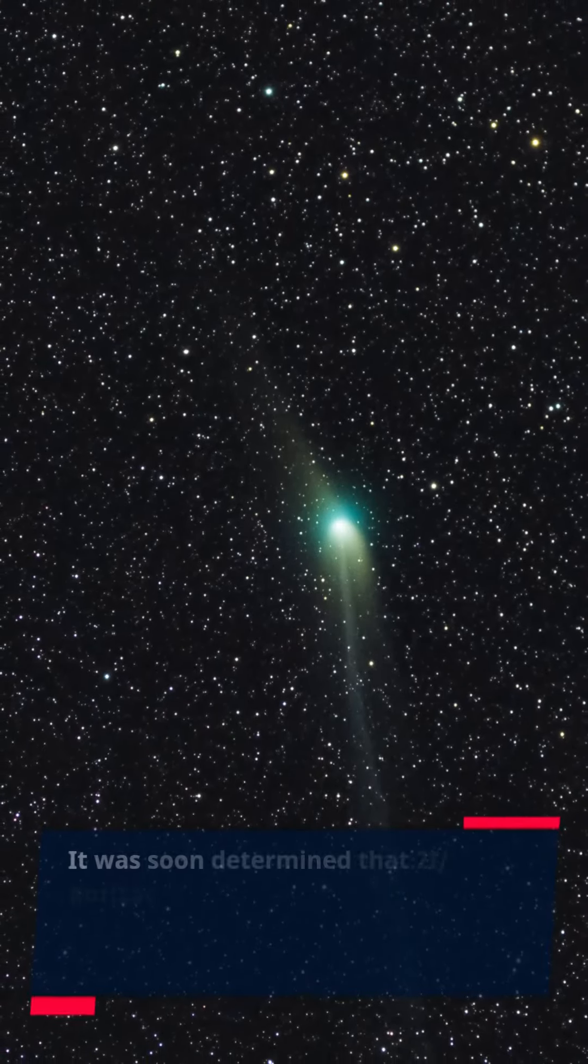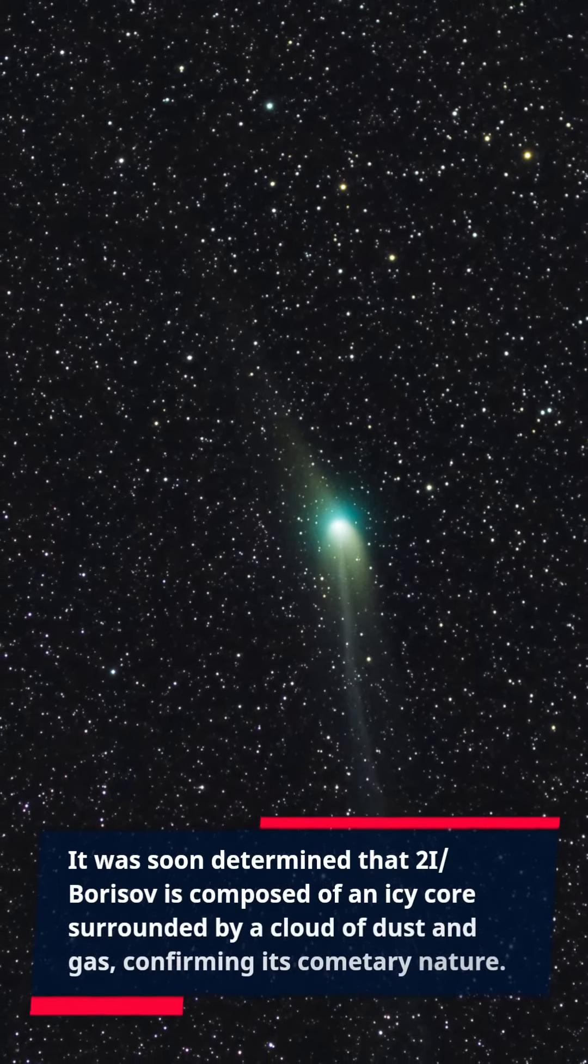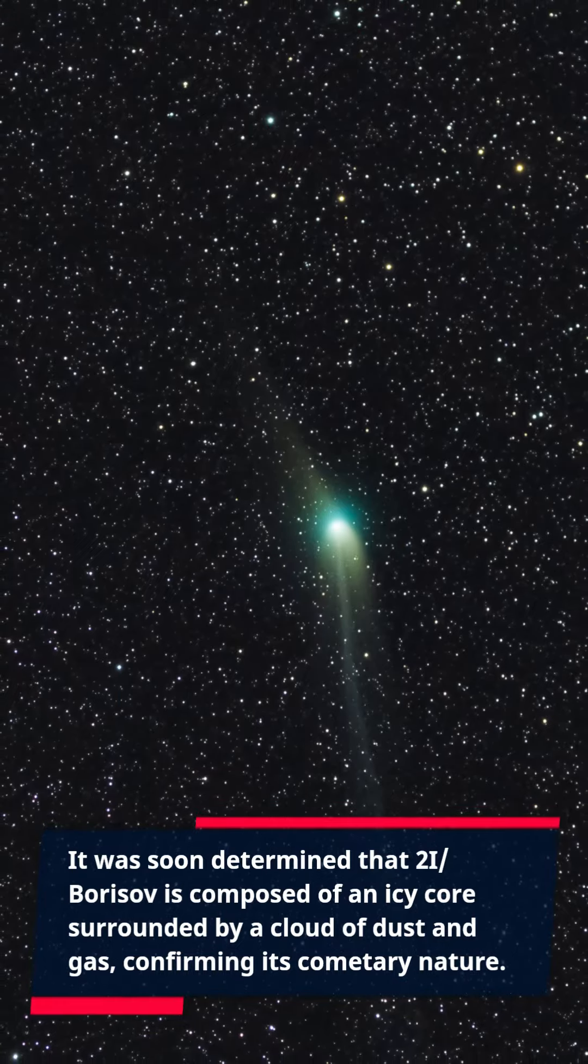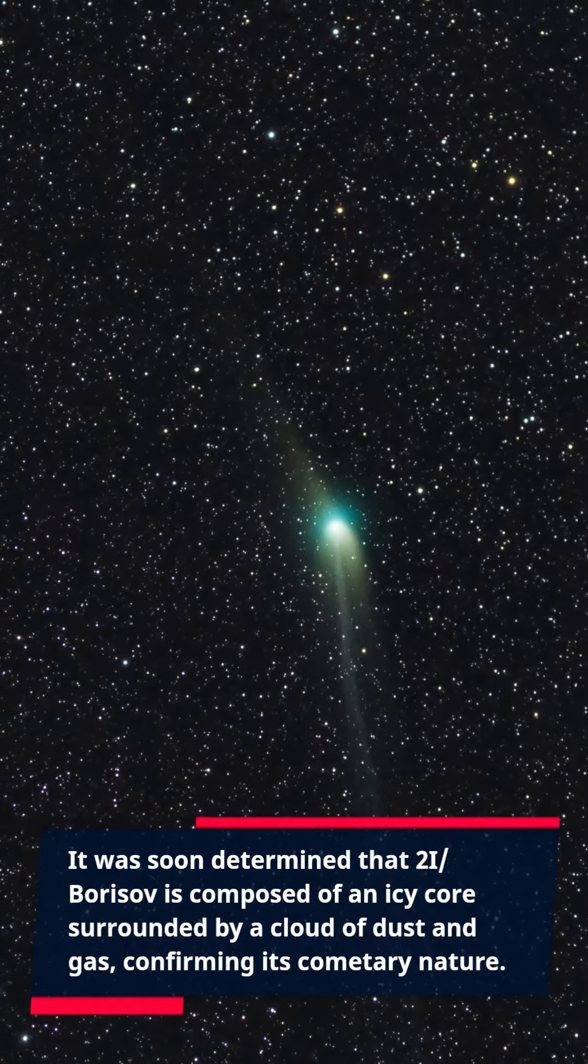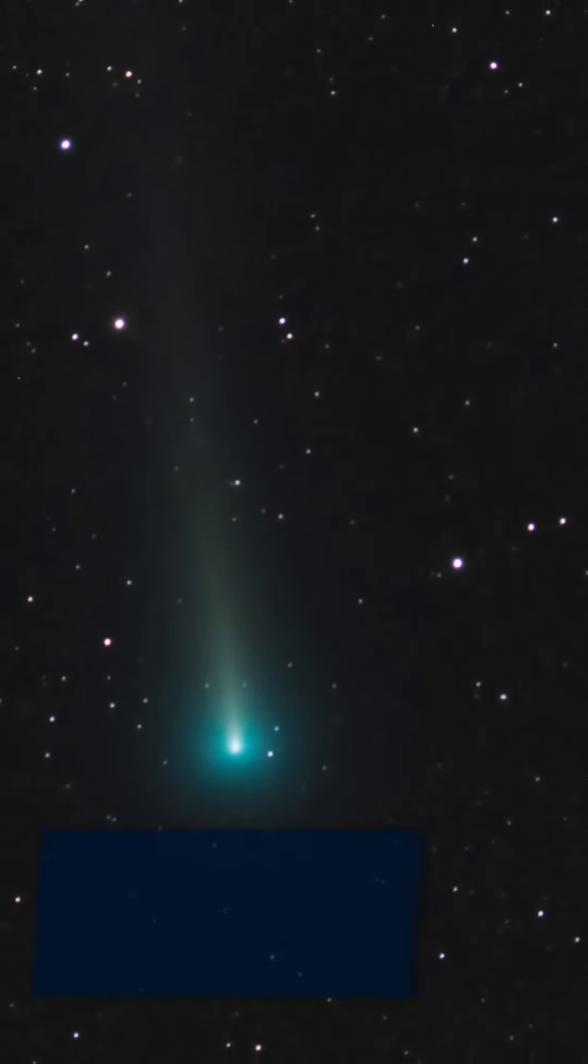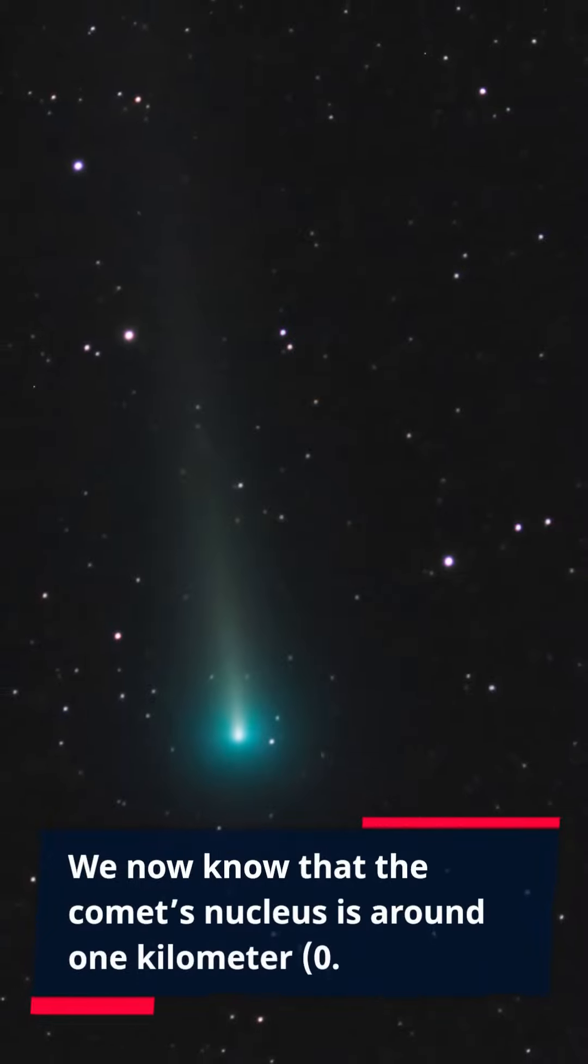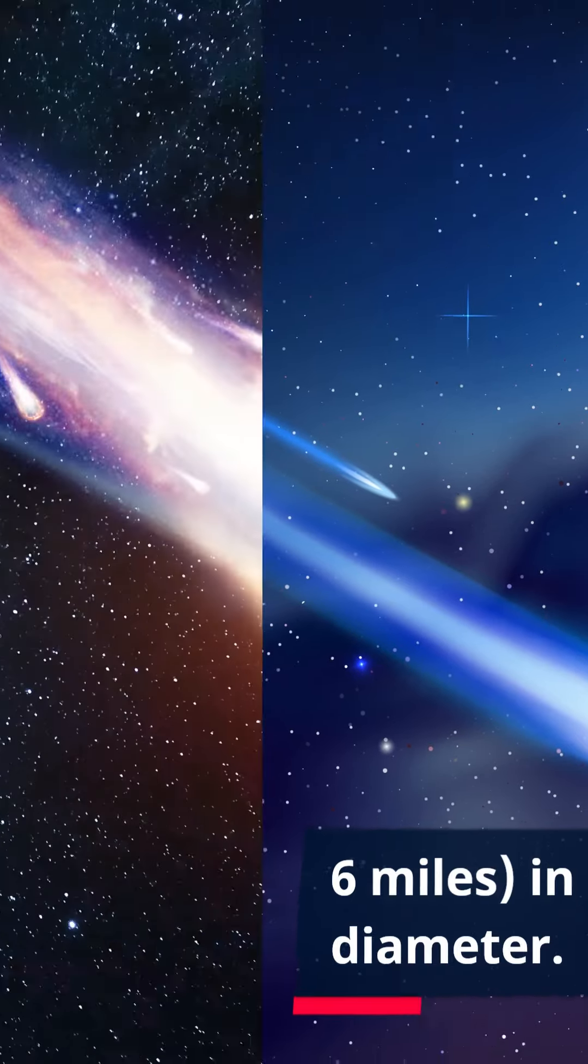It was soon determined that 2I/Borisov is composed of an icy core surrounded by a cloud of dust and gas, confirming its cometary nature. We now know that the comet's nucleus is around 1 kilometer, 0.6 miles, in diameter.